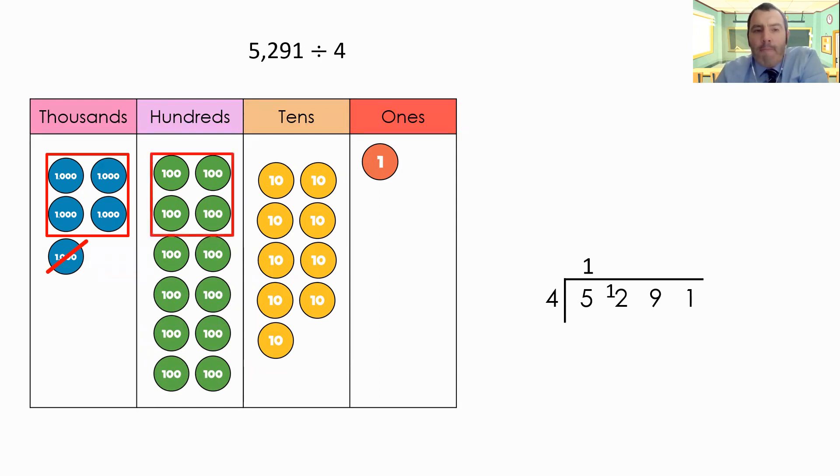So I'm now dividing 12 by four. So one, two groups of four, three groups of four. So this one works out exactly right. I've got three groups of four in there. So I'm going to write down my three above. I've got nothing to exchange up because I've used every single counter in that column.